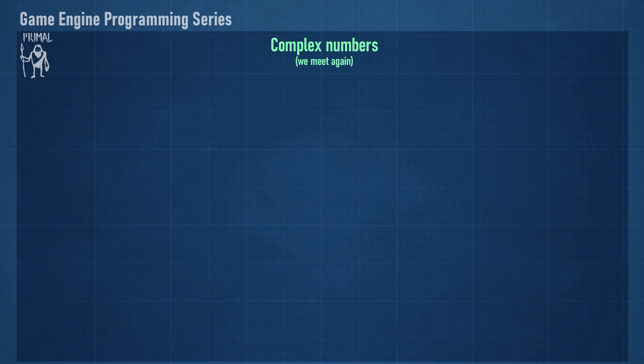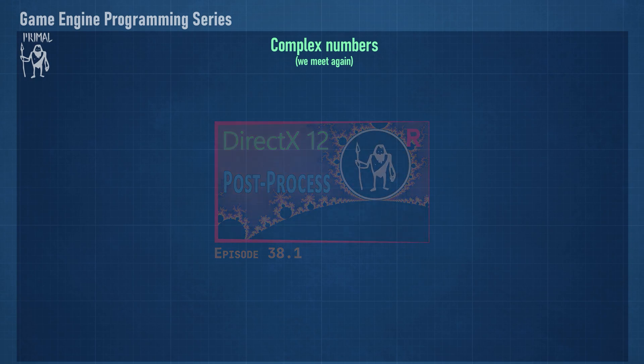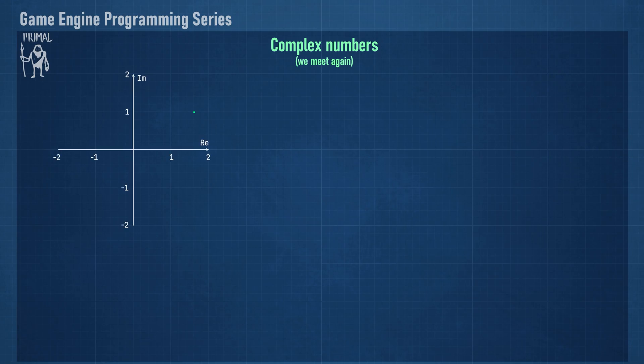Now let's have a look at complex numbers again. We already had an encounter with complex numbers when we did the Mandelbrot fractals. Here we'll have a short recap, and we'll examine some properties of complex numbers that have to do with rotations. Complex numbers are defined as points on the complex plane, consisting of a real axis and an imaginary axis.